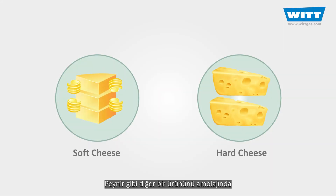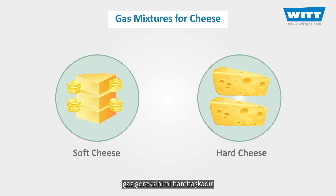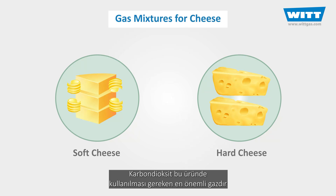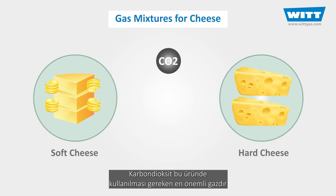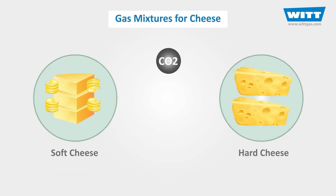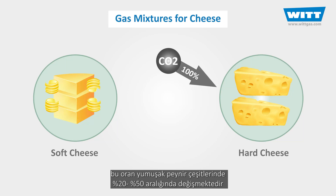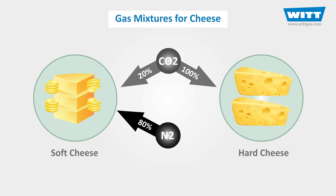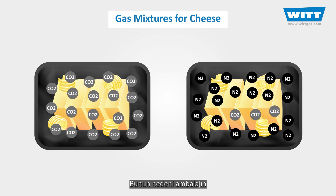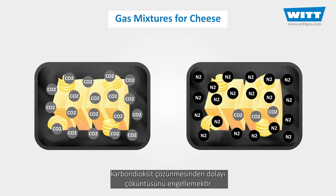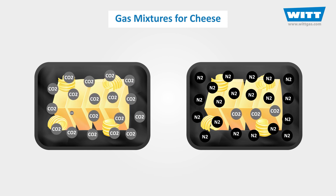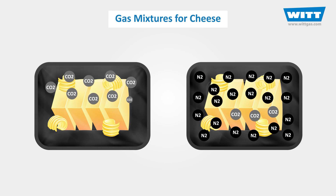In the packaging of some other types of foods such as cheese, the mixture is completely different. In this case carbon dioxide is used first and foremost. The carbon dioxide level in hard cheese packages is up to 100 percent, and for soft cheeses the level is usually restricted to 20 to 40 percent. The reason for this is to prevent the package from collapsing under atmospheric pressure as the carbon dioxide dissolves into the water content.